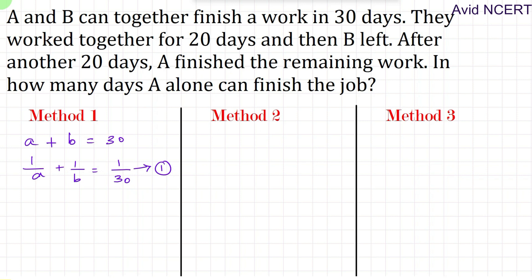For the second equation: they work together for 20 days and then B left, which means B has worked for 20 days — that is 20 times (1/B). A has worked for 20 plus 20, which is 40 days, so A has done 40 times (1/A). The total equals 1, which is the total amount of work. Let this be the second equation.